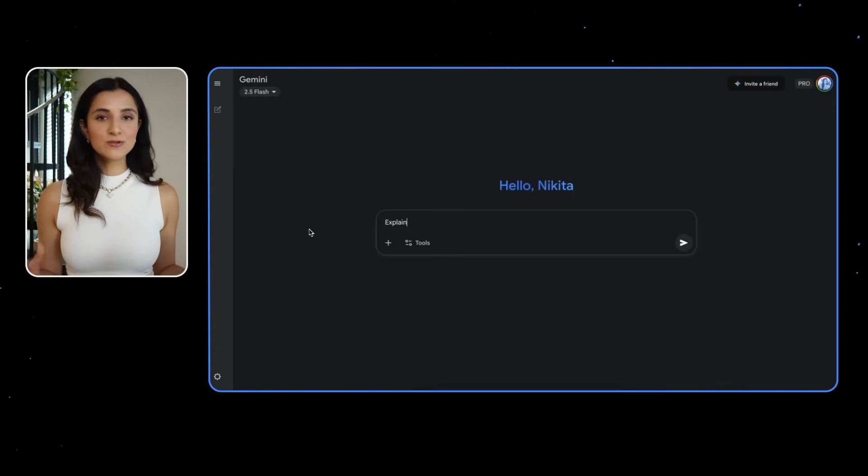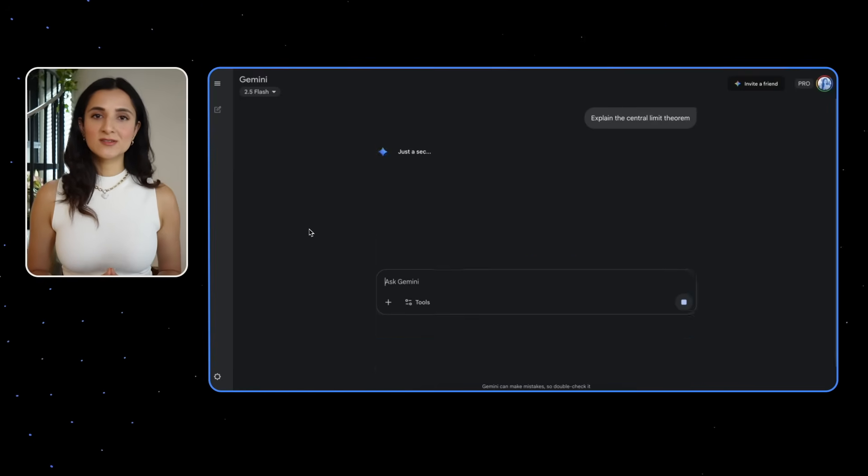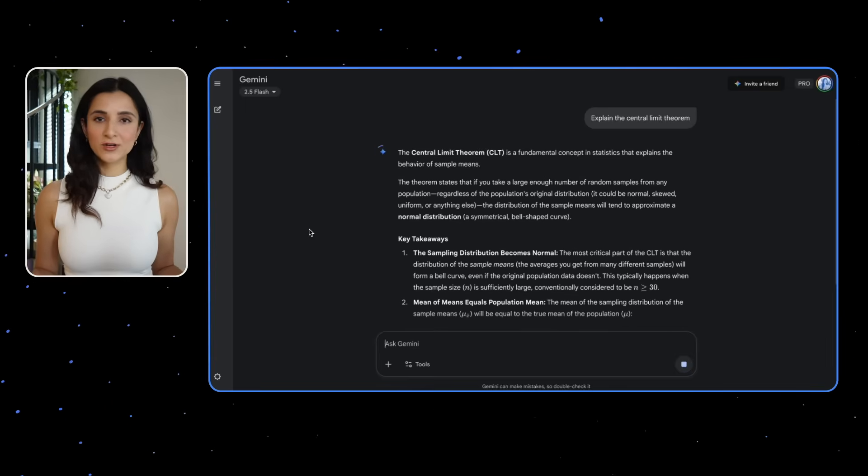But training models is only half of the story. We don't just train models. We also use them to generate responses when a user interacts with the model, often referred to as inference or test time. So researchers started to wonder, can we make models better by giving them more compute power when generating a response? And this became known as test time compute.